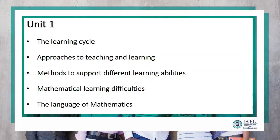Under unit one we have five topics listed: the learning cycle, approaches to teaching and learning, methods to support different learning abilities, mathematical learning difficulties, and the language of mathematics. From each sub-topic we have covered something — one or two things. Not everything as listed, but this is just a guideline. Under mathematical learning difficulty, for instance, go through and see what is important, what is in your syllabus, what should you cover.